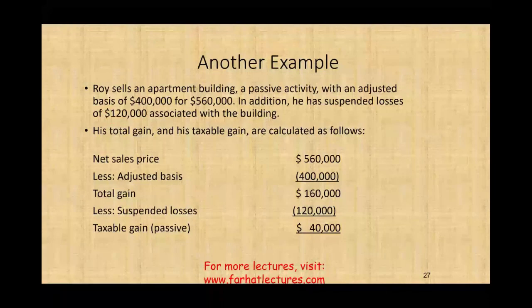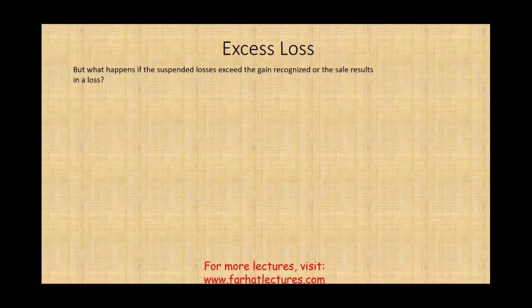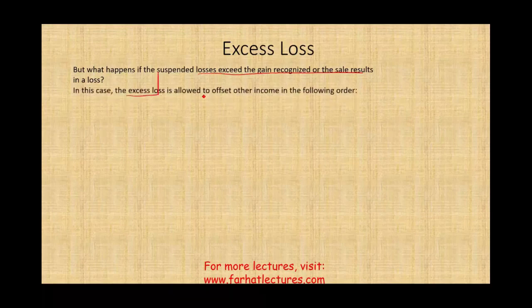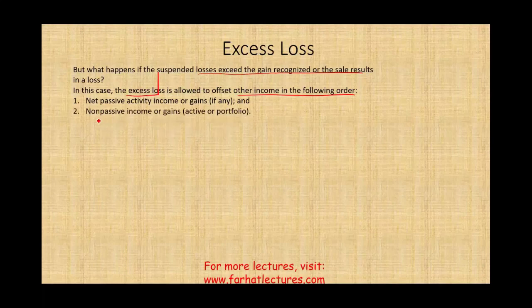What if we have excess losses — what if the suspended losses exceed the gain recognized on the sale? The excess loss is allowed to offset other income in the following order: first, against net passive activity income or gain; and if not sufficient, then against active or portfolio income. So once we dispose of the asset, any remaining excess losses can be used against active or portfolio income.